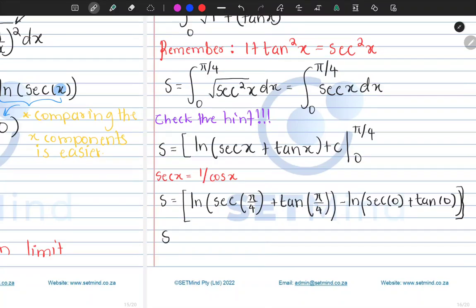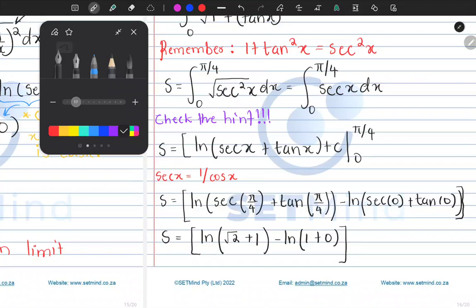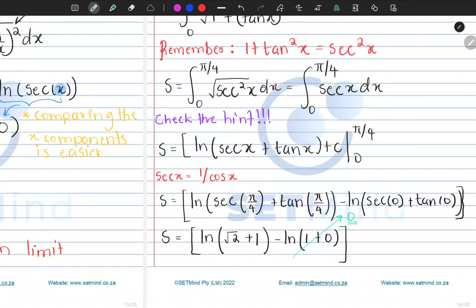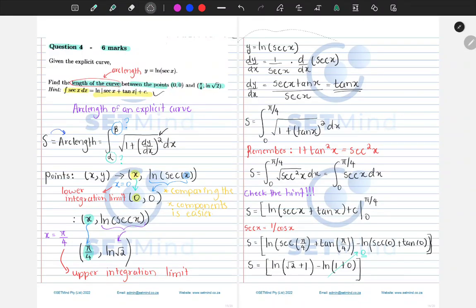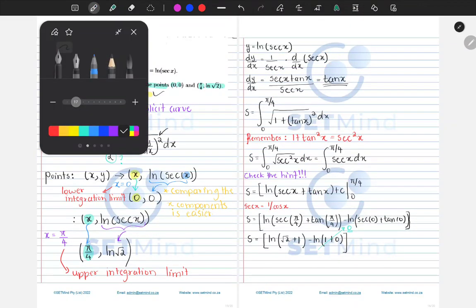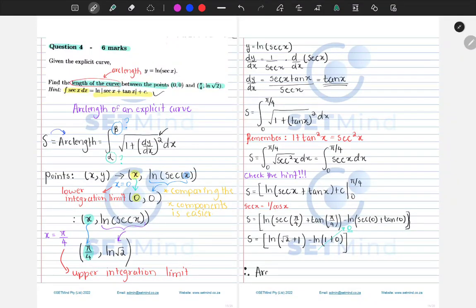Our s will be ln of sec(π/4). Our cos(π/4) is the same as 1/√2, so this will just be √2. Plus tan(π/4) is simply 1, then minus ln of sec(0), that is 1, plus tan(0), which is 0. We should all know that ln(1) is essentially 0. So our final answer, the arc length, will simply be ln(√2 + 1). Therefore, the arc length or the length is simply ln(√2 + 1) units.